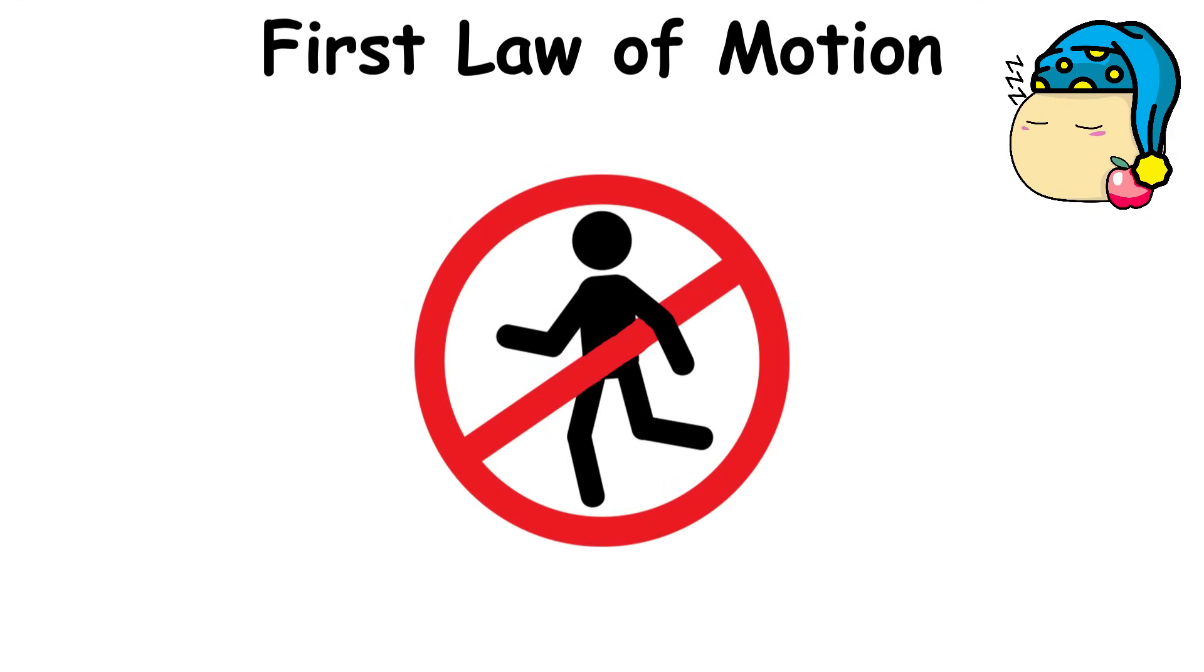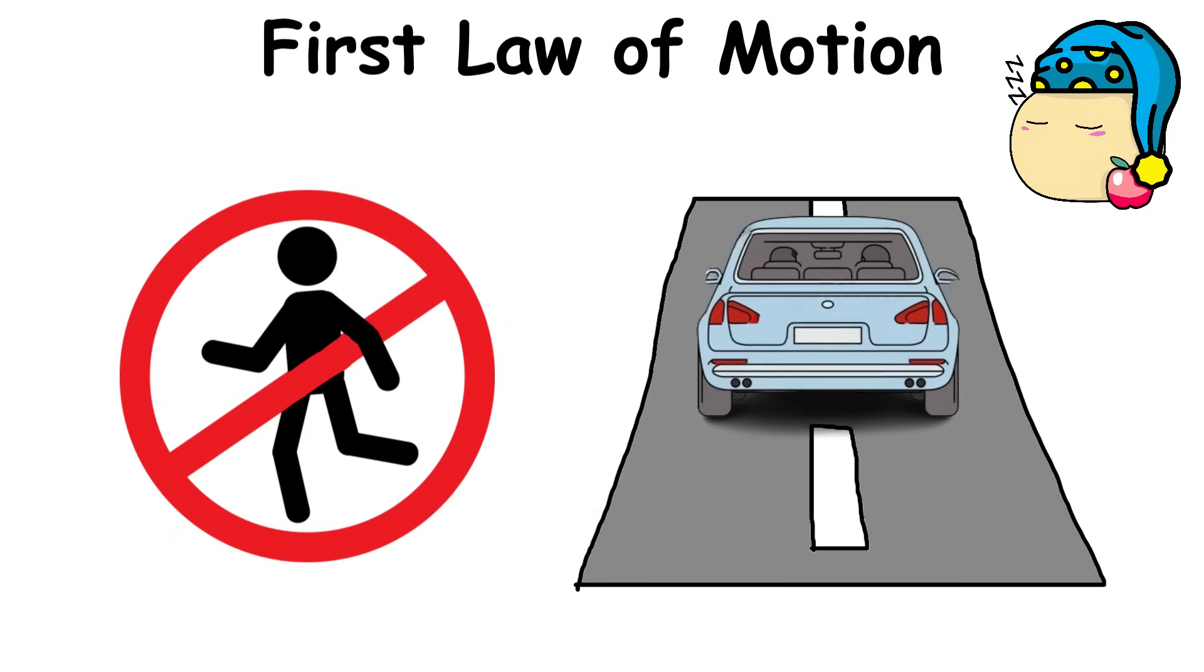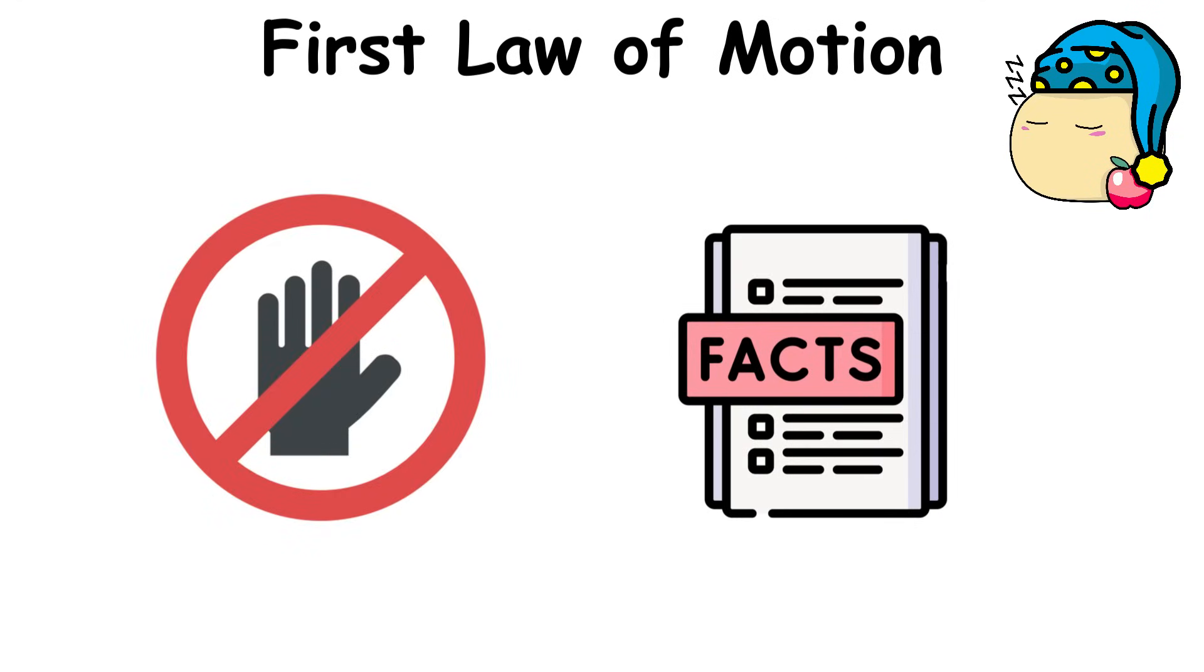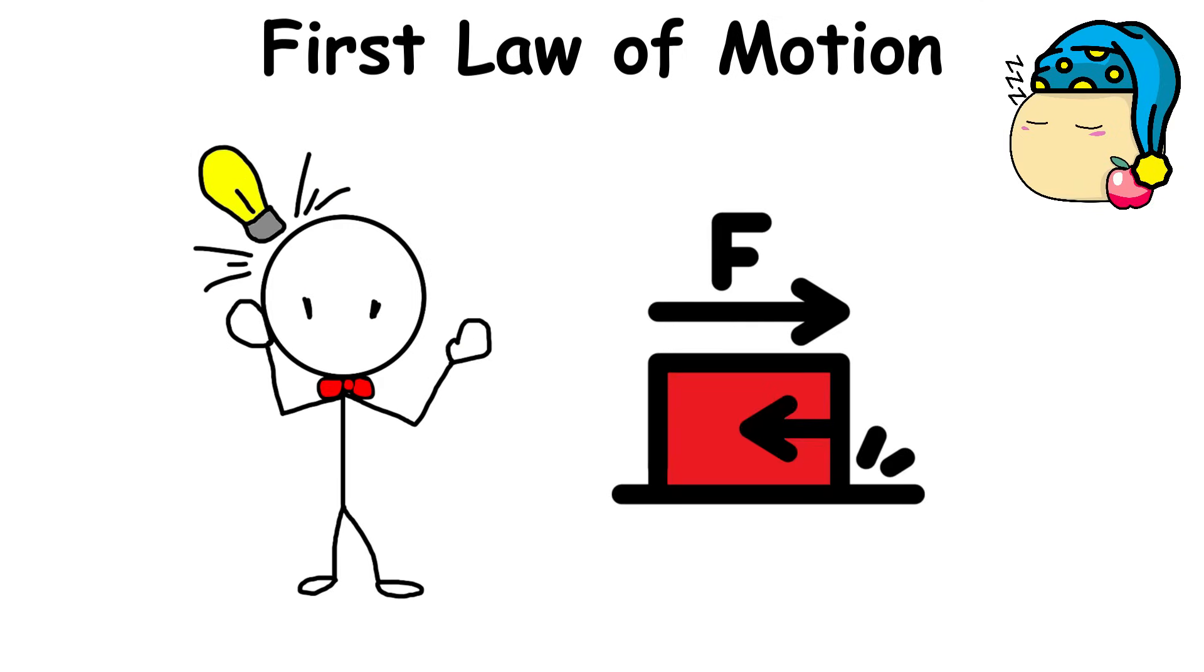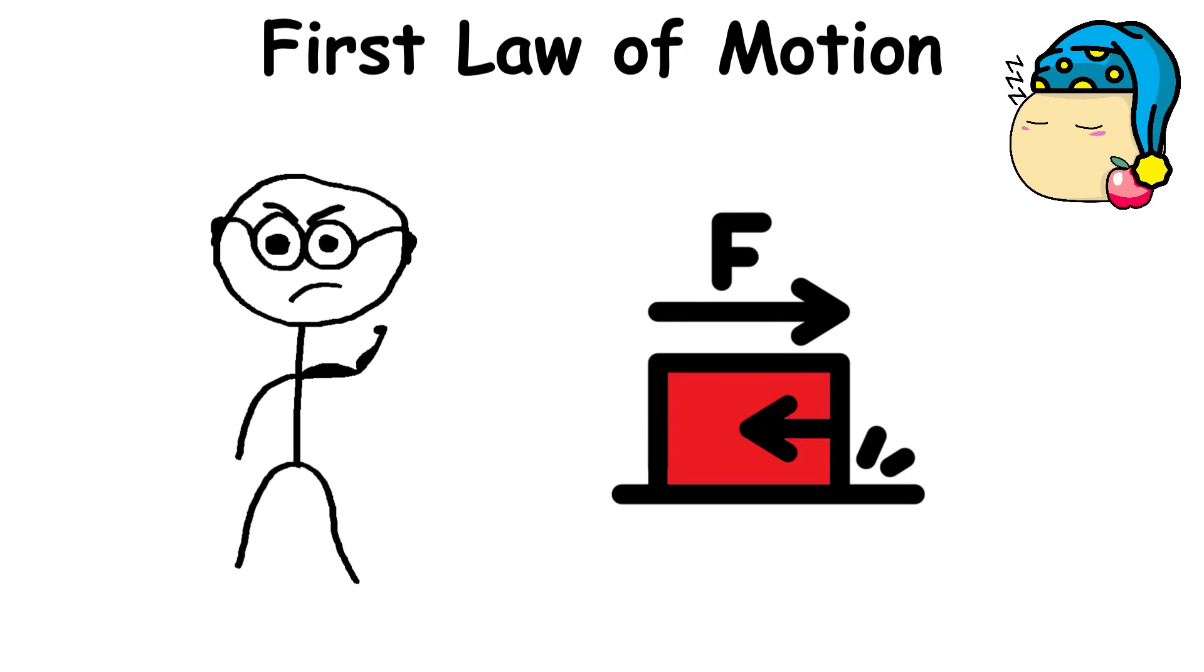Whether an object is stationary or is moving on a straight path, it will remain that way until something changes that fact. But the law assumes the lack of friction and other forces, such as air resistance.